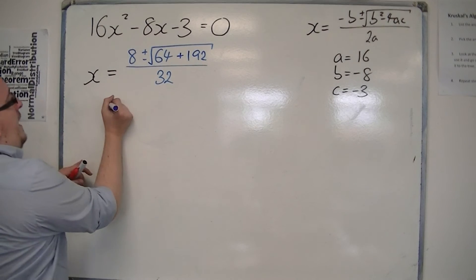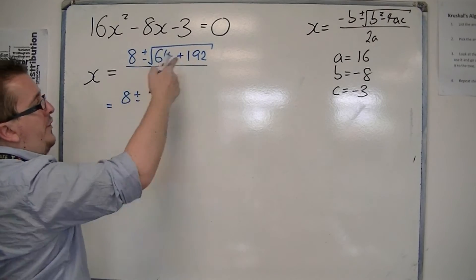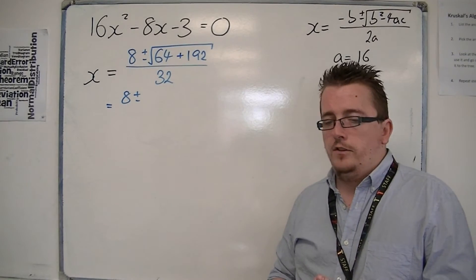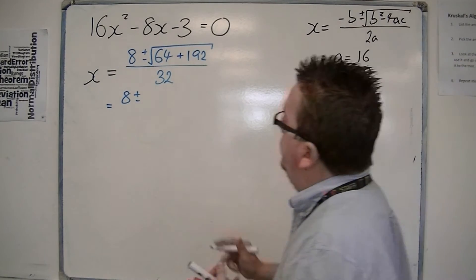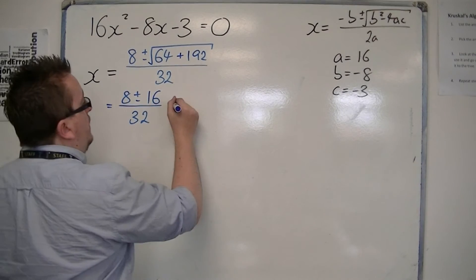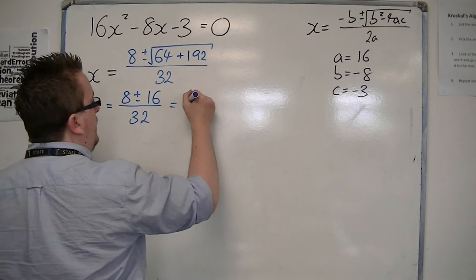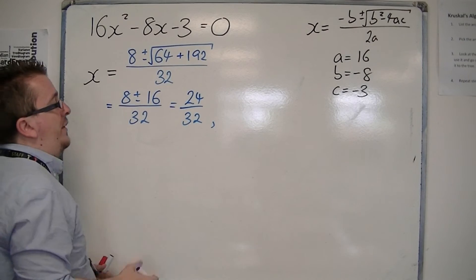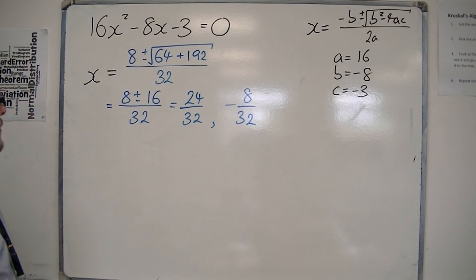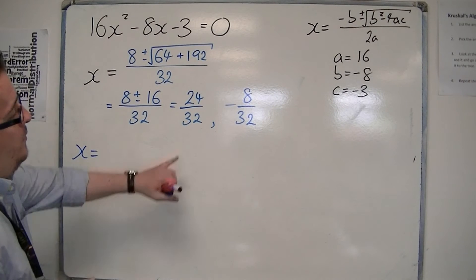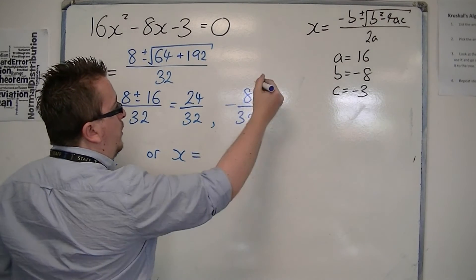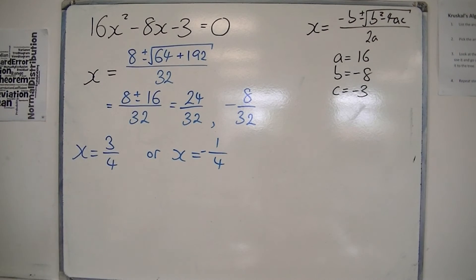Then you would have 8 plus or minus, well, 64 plus 192 is 256, the square root of 256 is 16, so you have, this being 8 plus 16 is 24, so you've got 24 over 32, or 8 take away 16 over 32, or 8 take away 16 over 32 is minus 8 over 32. Those two fractions can be simplified down, so you've actually got x equals 3 quarters, or x is equal to minus 1 over 4.